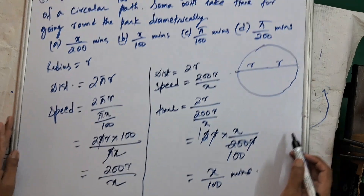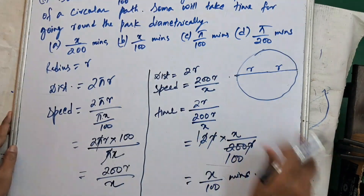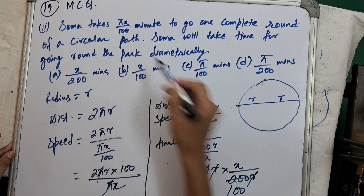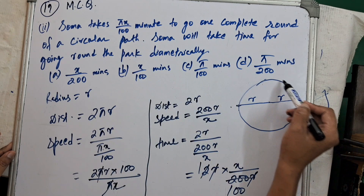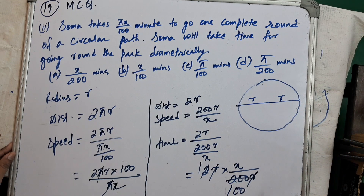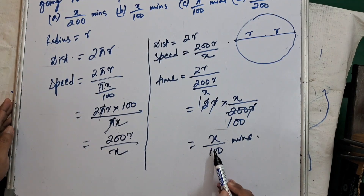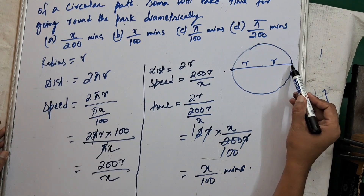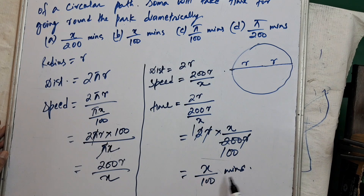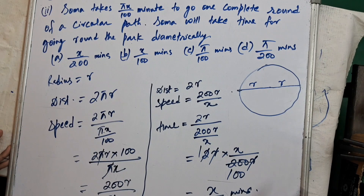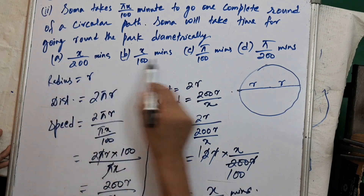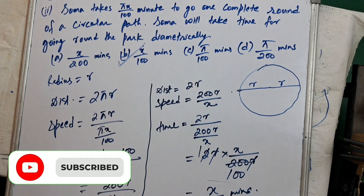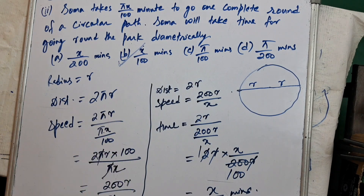So if Soma takes πX/100 minutes to go around the circular field, she will take X/100 minutes to go across the field diametrically. Option B, X/100, is the correct option.